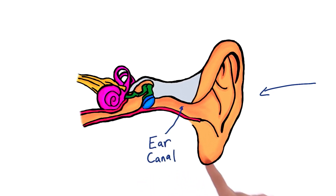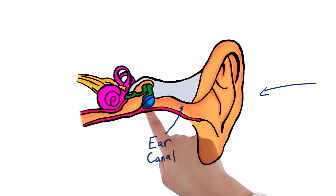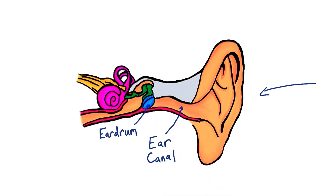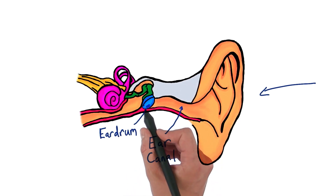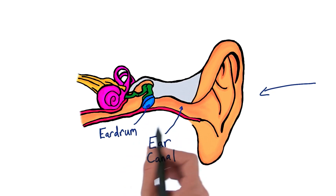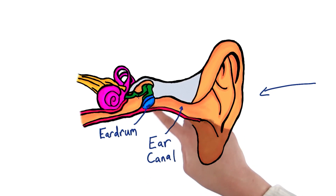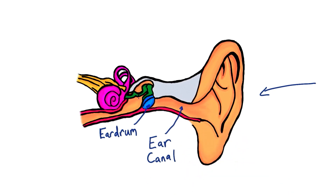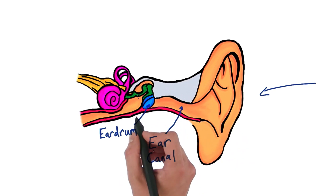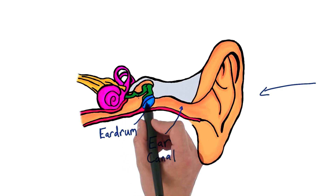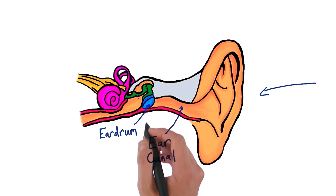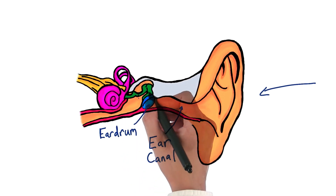And then what do you think happens? Then it gets to this thing here. That's right, and this thing is called the eardrum. It's a tight membrane that vibrates at the same frequency as the incoming sound wave. But then what are these things connected to the eardrum? These are three tiny bones, so the vibrations in the eardrum will cause these bones to vibrate.